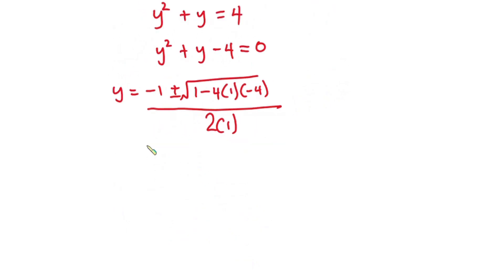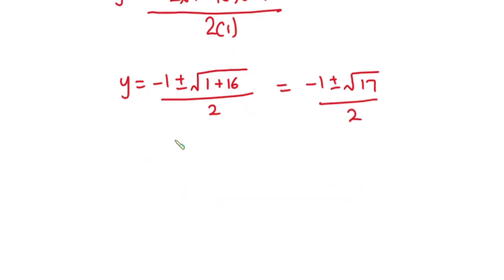Now let's go ahead and simplify this. We have y is equal to negative 1 plus or minus square root of 1. Then we have negative 4 times 1 is still negative 4. Negative 4 times negative 4, that is positive 16. So we have plus 16 here, all divided by 2. And this is the same as negative 1 plus or minus square root of 17 over 2.